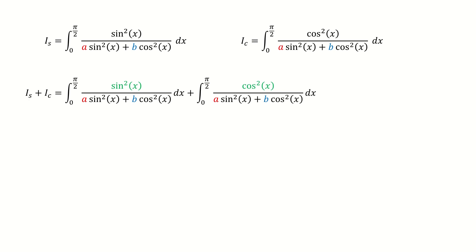So first, we add these two equations together. Then we group them into a single integral. Sin square plus cosine square equals 1. So we got here.